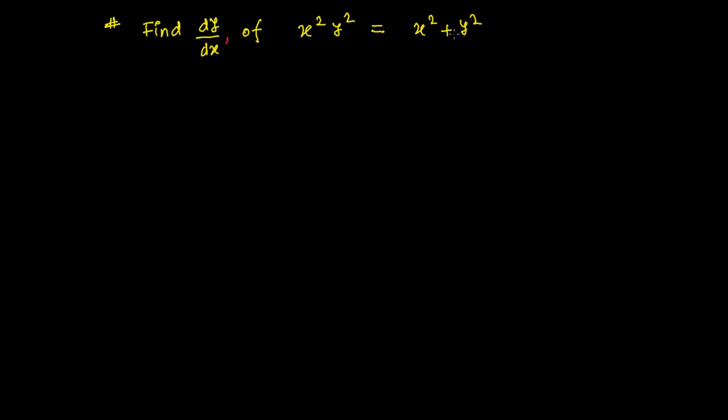Every time I've told you, whenever you solve this type of problem, the first step is to differentiate both sides — left-hand side as well as right-hand side — with respect to x. Next, find all the places where dy/dx appears, bring them to one side, take dy/dx as a common factor, and send everything else to the other side. That will be your derivative. Two steps only.